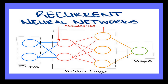What is a recurrent neural network? Recurrent neural networks are a type of neural network used for processing sequences of data, such as a series of numbers, words, or sentences. They are called recurrent because they use information from the previous step in the sequence to make predictions about the current step.